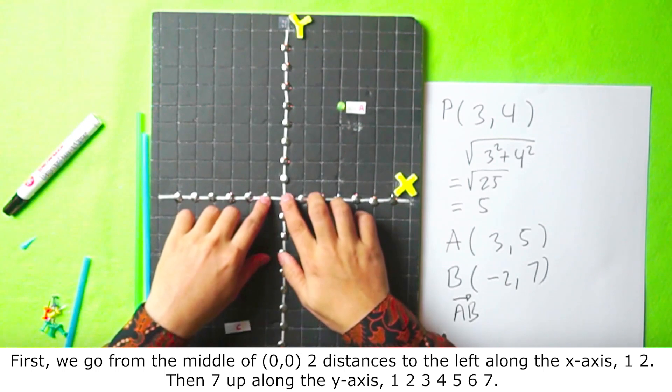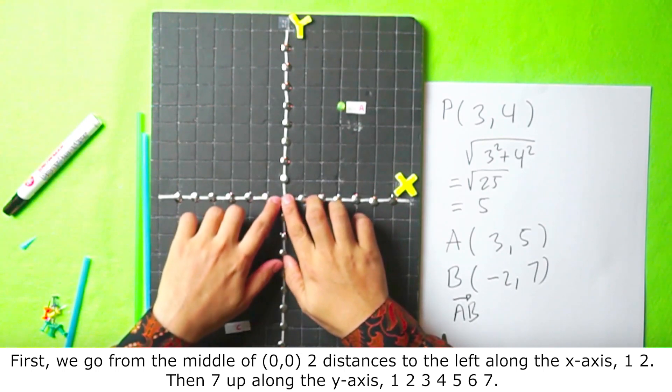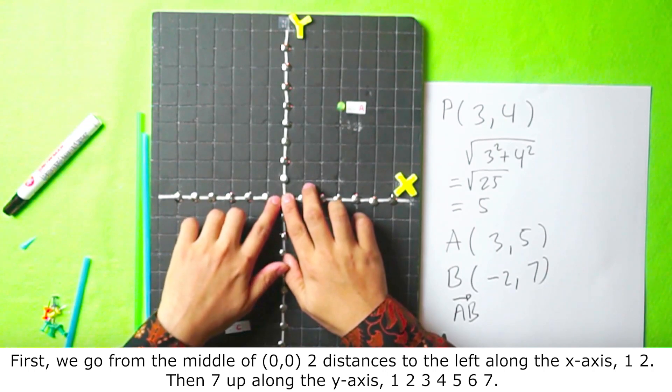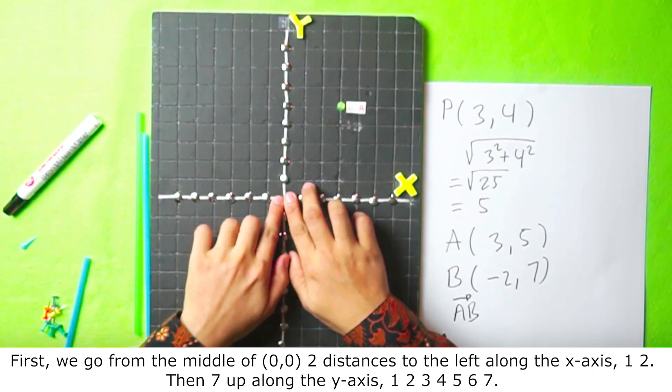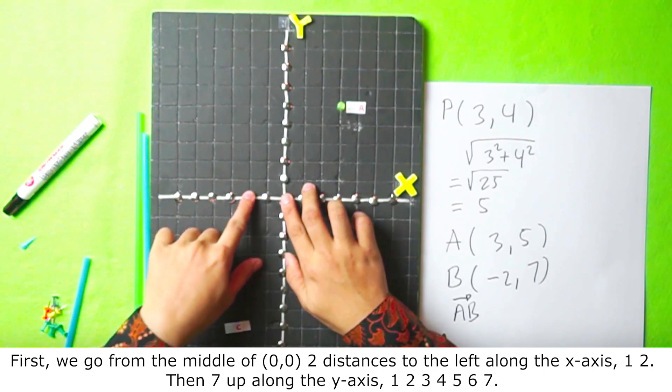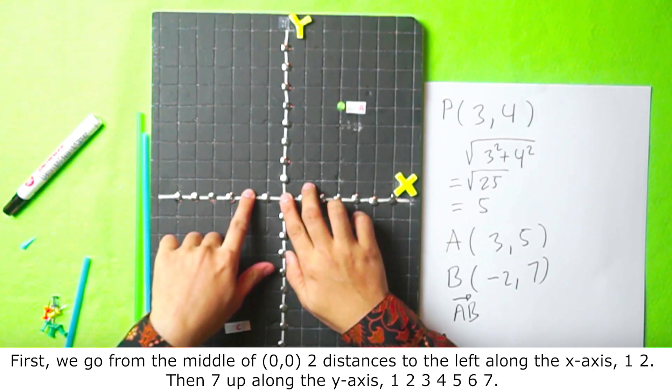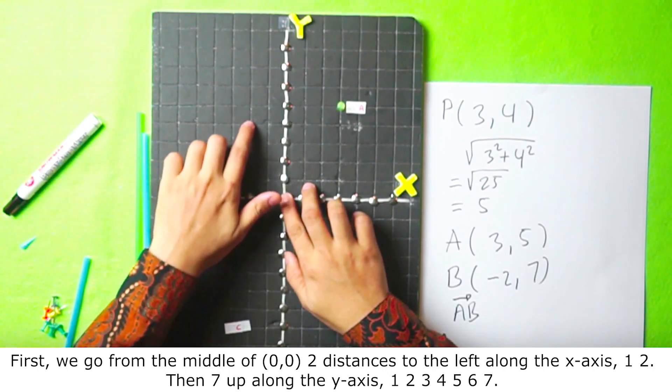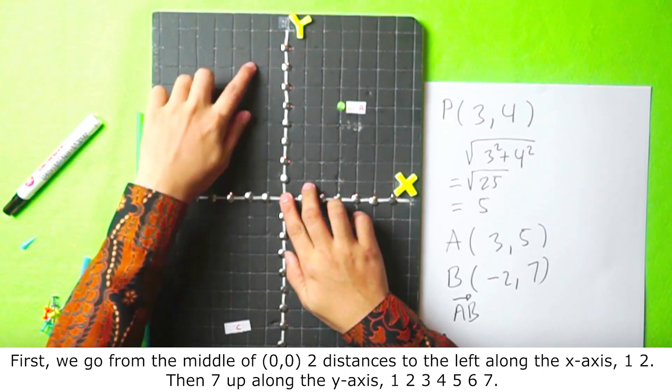First, we go from the middle of 0, 0, through distances to the left along the x-axis, 1, 2, then 7 up along the y-axis, 1, 2, 3, 4, 5, 6, 7.